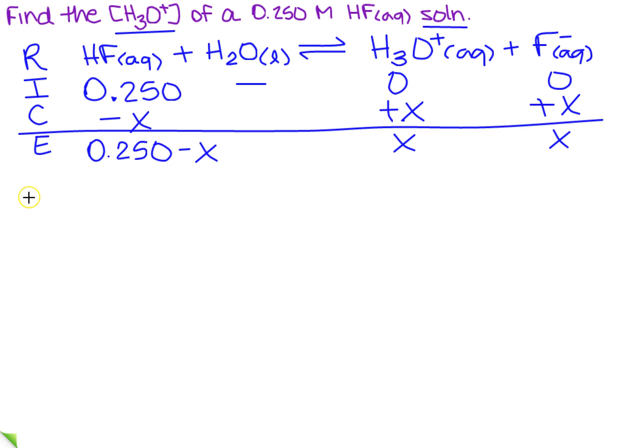So how do we solve this? Well, we know that HF is an acid, so the K sub A is the hydronium concentration times the anion divided by the acid.